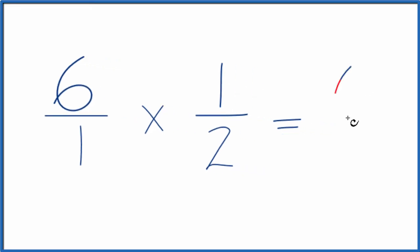So six times one, that's just six. One times two is two. So six times one-half is six over two.